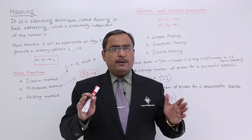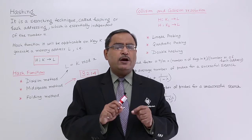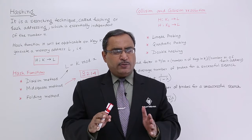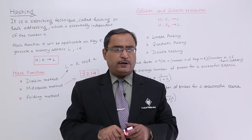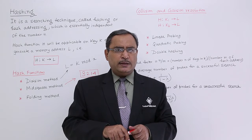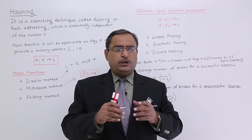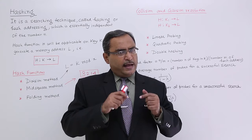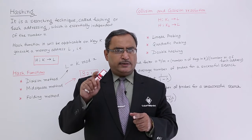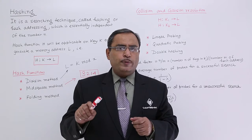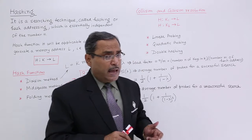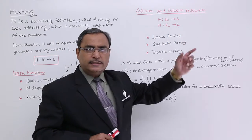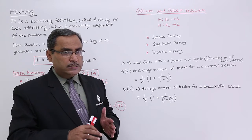We have a set of 40 employees. Each employee has one unique code — that is the key or the employee ID — so each key will have a distinct value, giving us 40 distinct values. We apply a hash function on a key value and get a memory address L. However, if the key values are different and we apply the same hash function on them, it is not mandatory that the resulting addresses L1 and L2 will always be distinct.